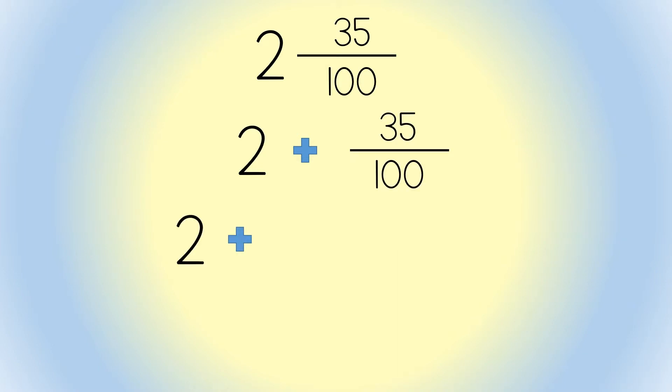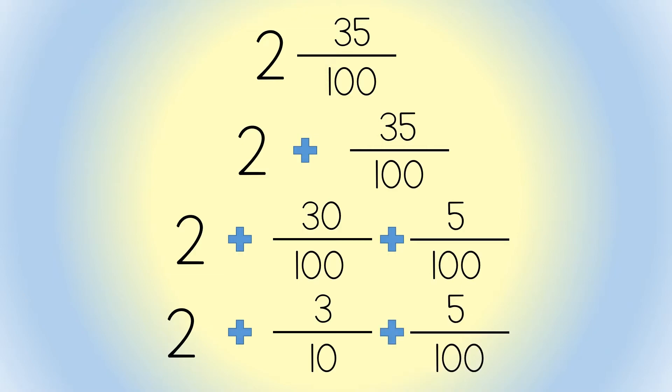Expanding further to 2 plus 30 hundredths plus 5 hundredths. Finally, 30 hundredths can be reduced into tenths. 3 tenths is equivalent to 30 hundredths, again, plus 5 hundredths.